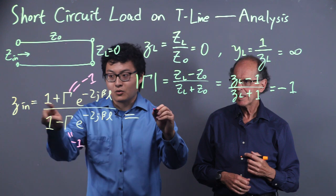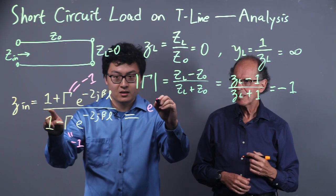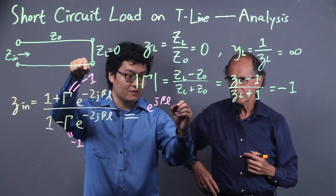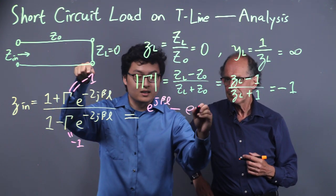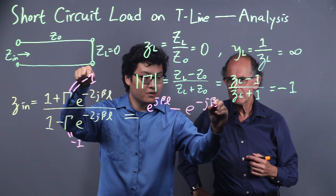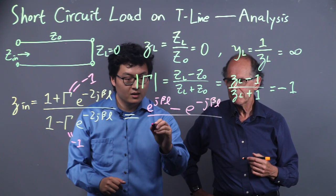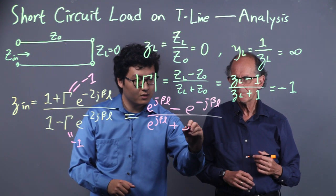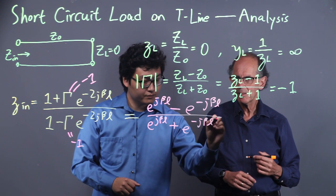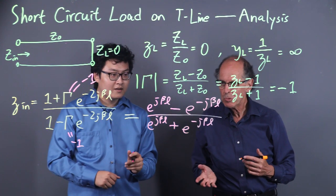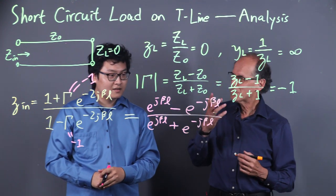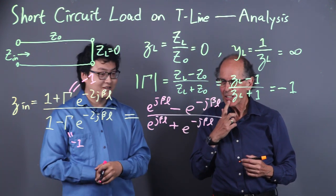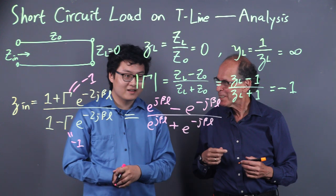It will be e to the j beta L minus e to the negative j beta L, divided by the same with a sign flip. Very symmetric. That looks rather familiar. Where have we seen that before? Something to do with Euler? Can you fish something out of this?